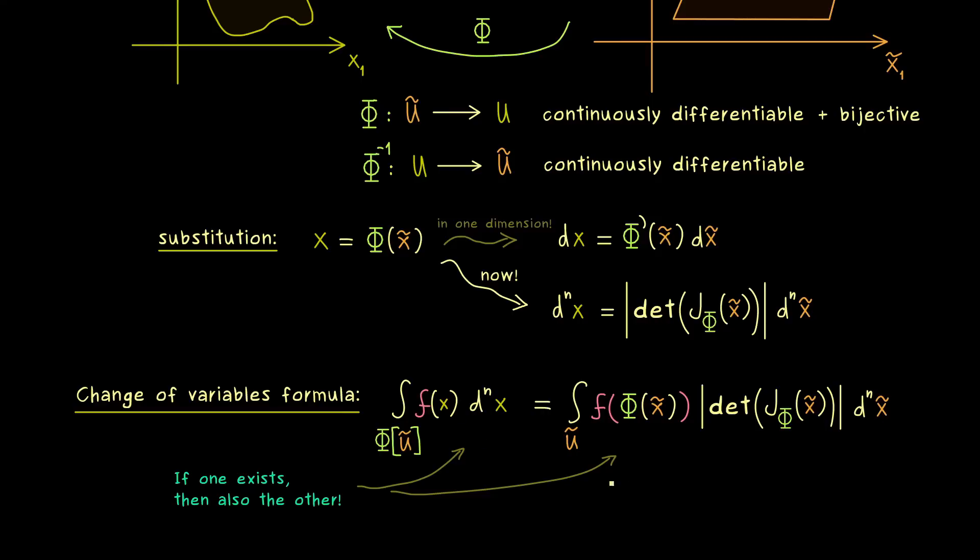This means that the domain could be much simpler on one side or even the function is much easier to integrate on one side. Of course the function on the right hand side looks more complicated in this formula but for some cases the combination of f and Phi could be very simple. In other words the crucial thing for solving a given integral could be finding a suitable function Phi for applying the change of variables formula.